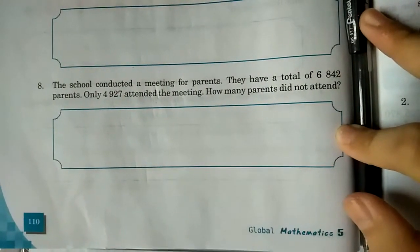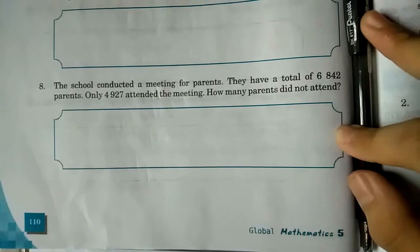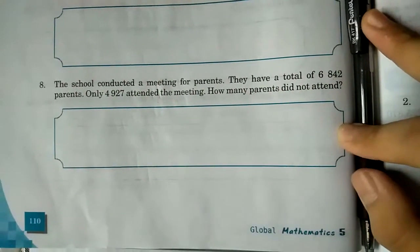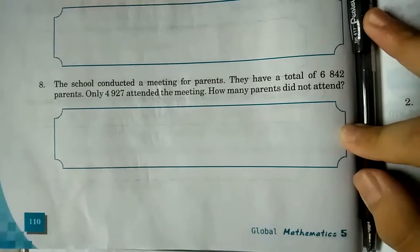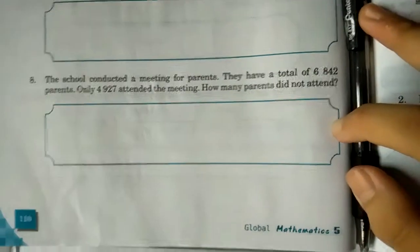The school conducted a meeting for parents. They have a total of 6,842 parents. Only 4,927 attended the meeting. How many parents did not attend?